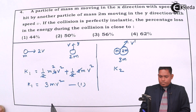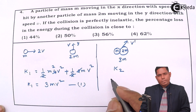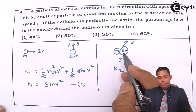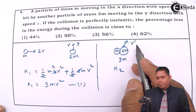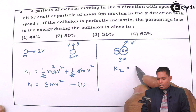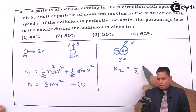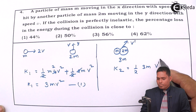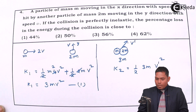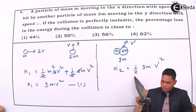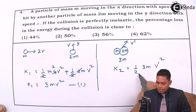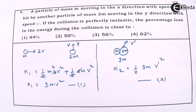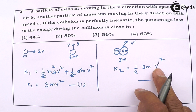After the collision, the two objects move together with a common velocity v'. So the final kinetic energy K2 = ½ × 3m × v'². This is equation two. Now we need to find v' in terms of v.